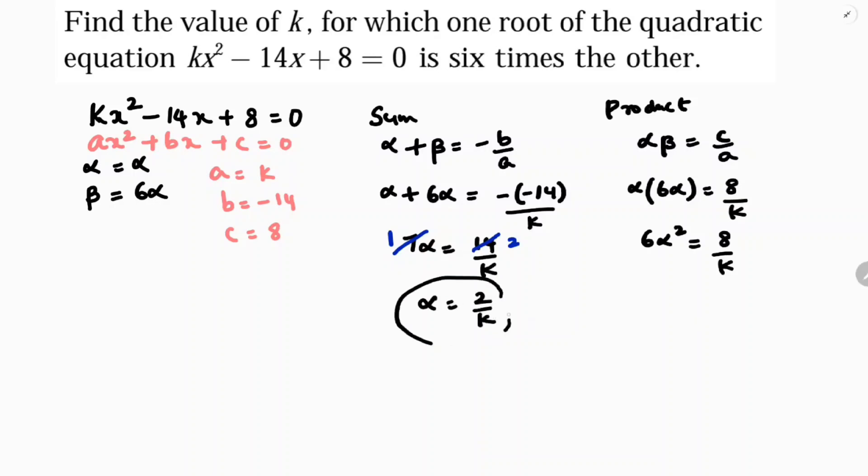This alpha value I will substitute in the product equation. So 6 times (2/k)² equals 8/k. 6 times 4/k² equals 8/k.